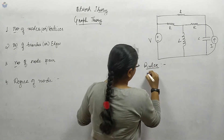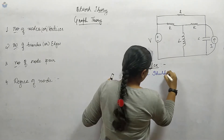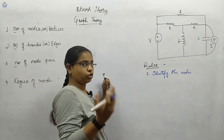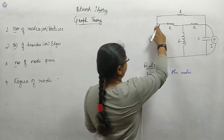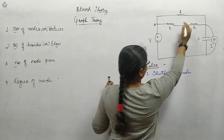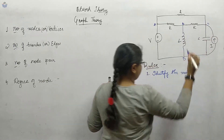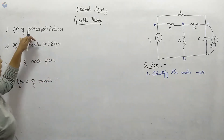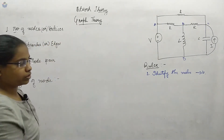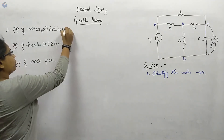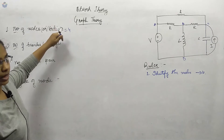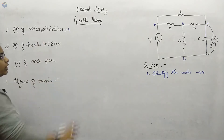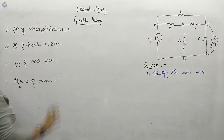First rule is to identify the nodes. Basically, more than one branch should be connected to that node. Here I can see node A, B, C, and D — these are the four nodes. In the terminology, nodes are also called vertices. More than one branch should be connected to that point. Be thorough with the naming so that you do not get confused if they ask what are the edges or what are the vertices.